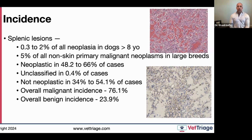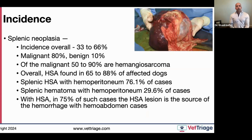In general, about three quarters of dogs with a splenic mass will have cancer and about 25 percent will have benign disease. Overall malignancy incidence is roughly 75 to 80 percent. I want to stress that these numbers are highly variable because every study differs in how data is collected, so I've tried to consolidate the literature into numbers you can actually use in practice.